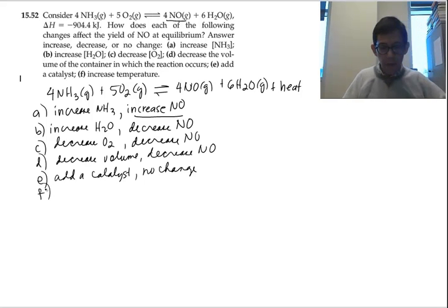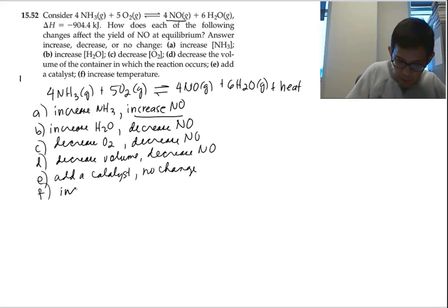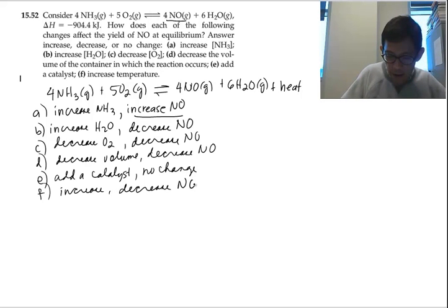Part F. Increase temperature. The reaction is exothermic, so heat is on the right side. If you increase the temperature, the system will get rid of the excess heat by going left. So when it shifts left, you are decreasing the amount of NO. Increase temp, decrease NO.